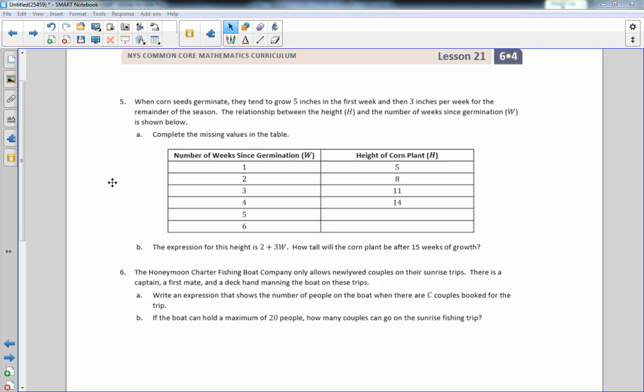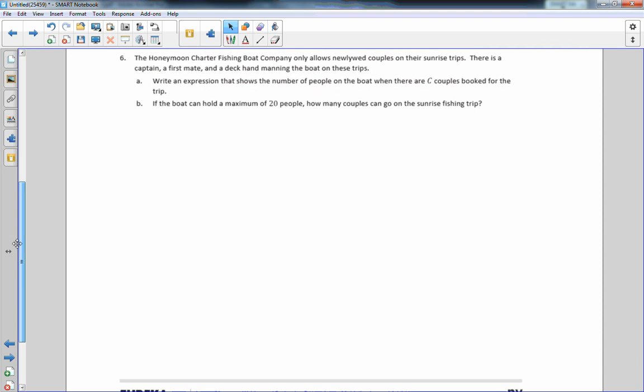So we're going to do Lesson 21, Problem Number 6. We have the Honeymoon Charter Fishing Boat Company, which only allows newlywed couples on their sunrise trips. There is a captain, a first mate, and a deckhand manning the boat on these trips, so that is three people, three people in their staff.